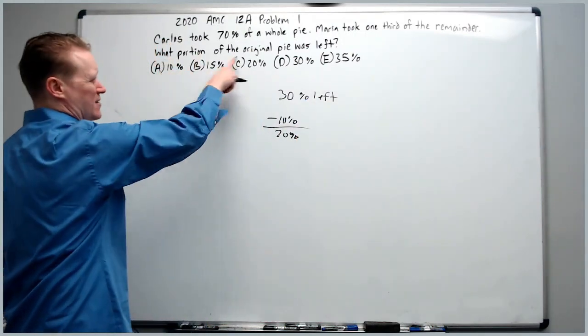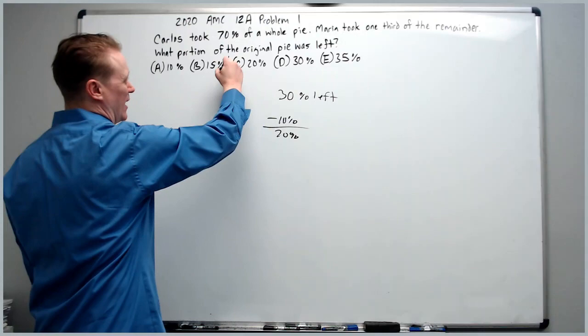20%. And what does it ask? What portion of the original pie was left? We've got it. It's C.